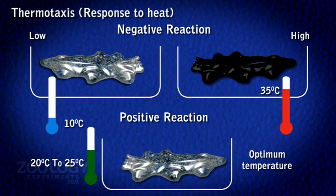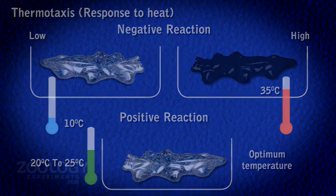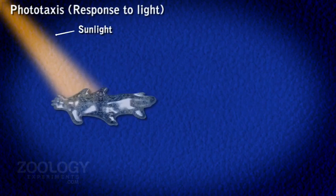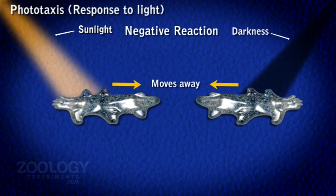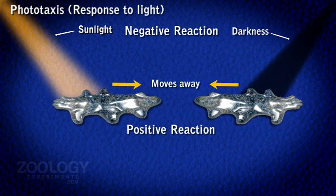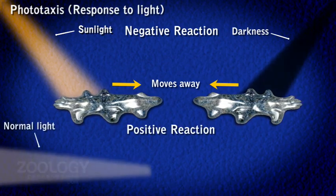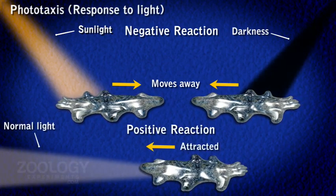Phototaxis: Amoeba avoids both direct sunlight and total darkness. It responds positively to normal and weak light.